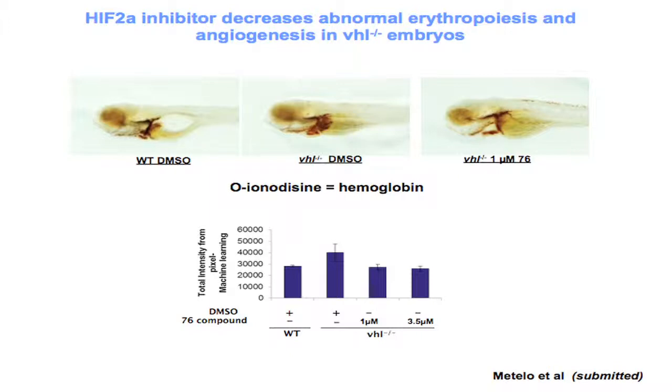We did the same with the VHL-negative fish without the chemical inhibitor. Here is the VHL-negative fish — you can see the redness is more intense because they develop blood vessels and erythrocytosis. Again, when we treat with the inhibitor, we see a significant reduction of the staining, which represents the combined effect on erythrocytosis and vascular development.